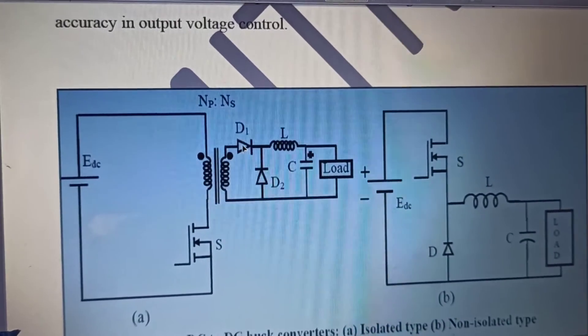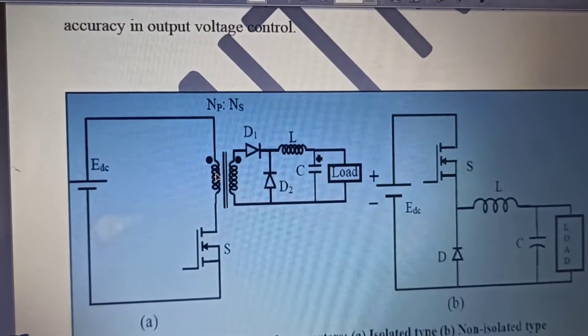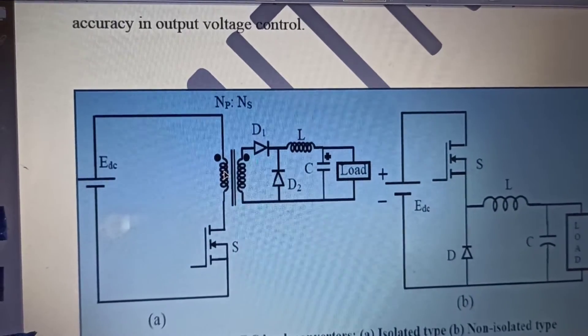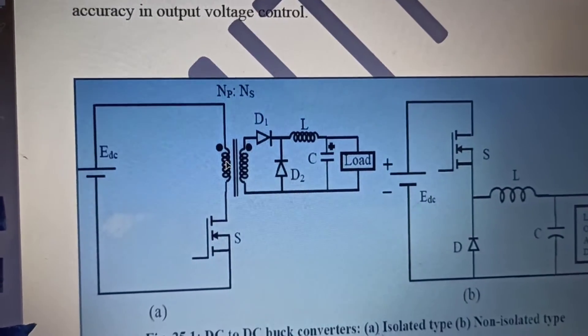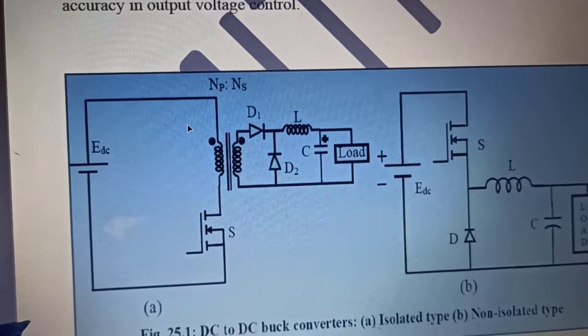And thus, this transformer can still work. Because the flux has not reached its saturation level. So, we can operate a transformer in DC in this converter.